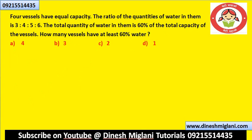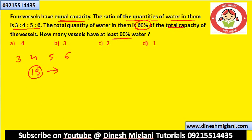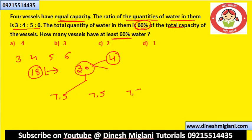Four vessels have equal capacity. The ratio of quantities of water in them is 3:4:5:6. Total quantity of water is 60% of total capacity. Let us say the vessels contain 3, 4, 5, and 6 litres, so total water is 18 litres. Since 18 is 60% of total capacity, total capacity = 18 ÷ 0.6 = 30 litres. Since all four vessels are equal, each has capacity 7.5 litres.